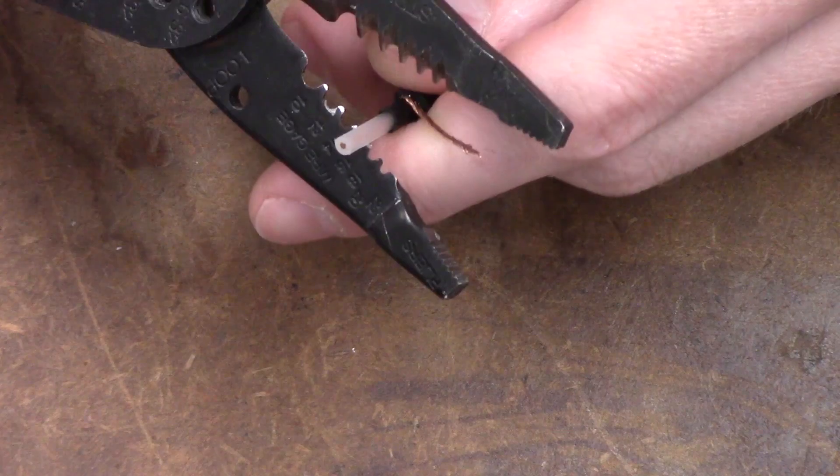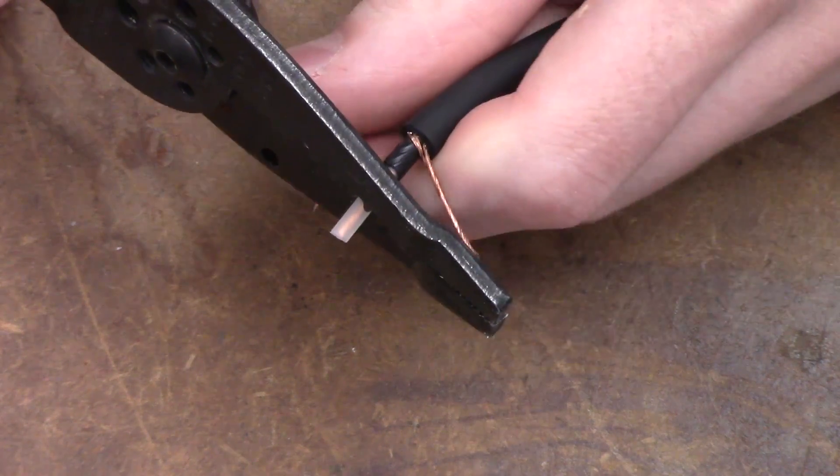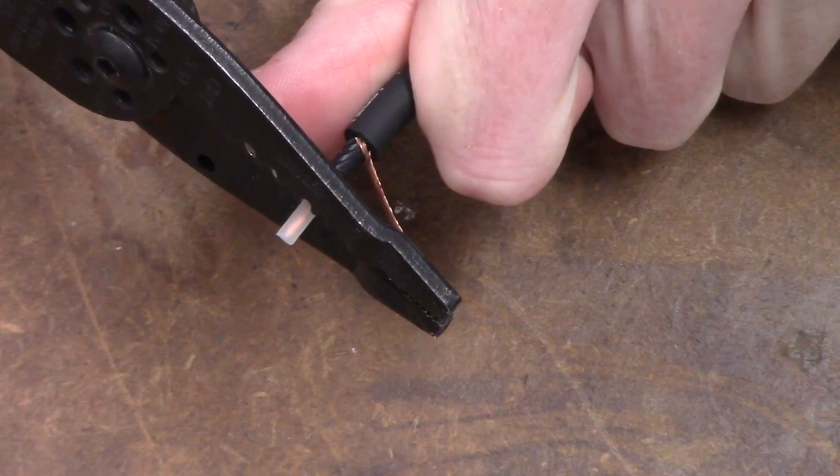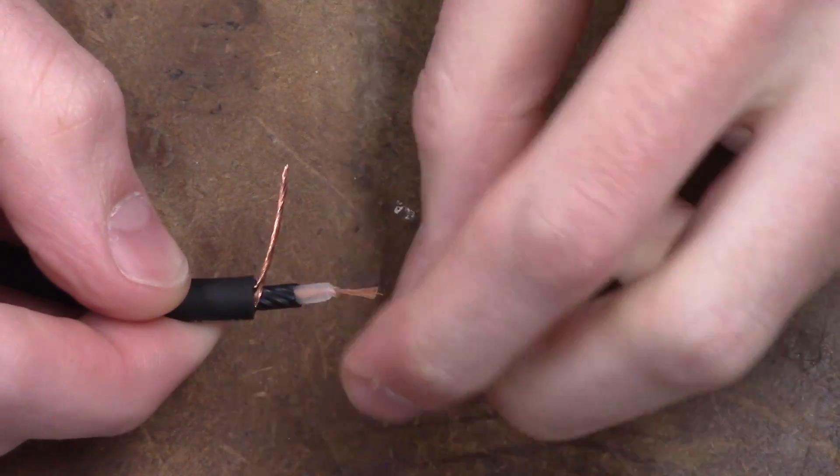There should be a small length of center insulation exposed between the electrostatic shield and the center conductor. Twist the copper strands of the center conductor together.